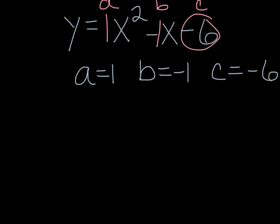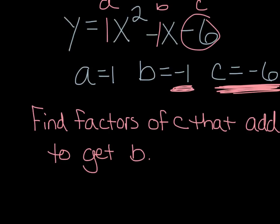What you want to do is look at c — that last number — and find factors of c that will add together to give you b. Keep in mind that this is only the process we're going to use when a is 1. We'll do some factoring where a is bigger than 1 in the next section. But for simple factoring, we're only going to do this when a equals 1.